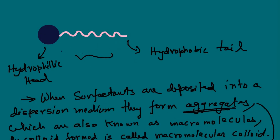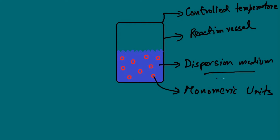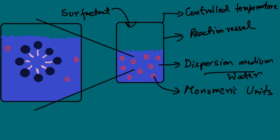When all of the surfactant molecules are deposited in the dispersion medium — which is water — micelle formation occurs. In the micelle, all the hydrophobic tails are on the inner side, and all the hydrophilic parts are on the outside, because the hydrophilic parts try to attach with the water molecules.